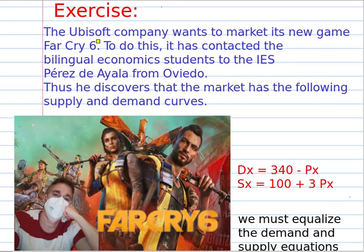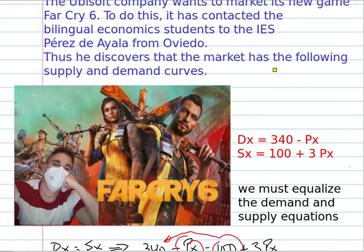Exercise. Now we go to see an easy exercise about the equilibrium of the market of goods and services. A company wants to market its new game, Far Cry 6. To do this, it's a bilingual economics student in second year, Perez de Ayala from Overo. He discovers that the market has the following supply and demand curves. This is the demand and this is the supply.